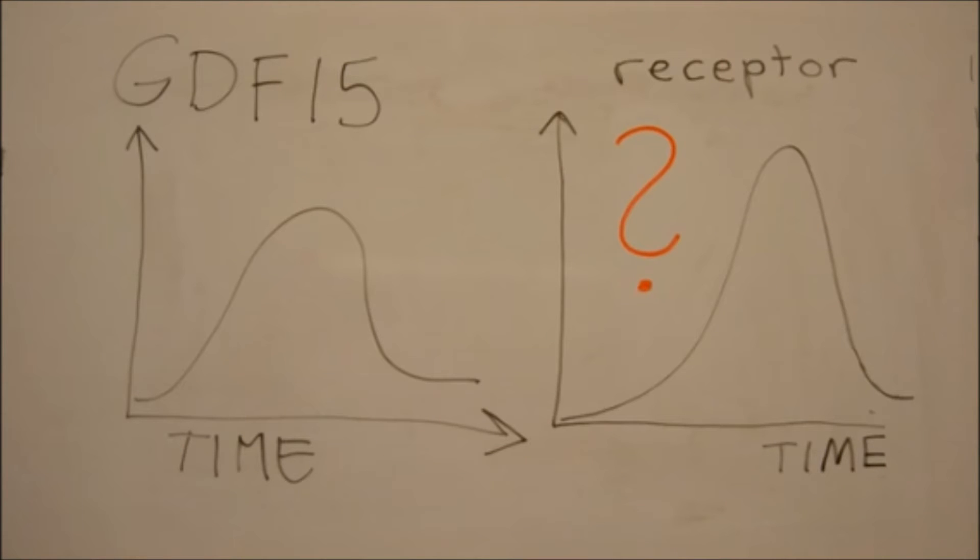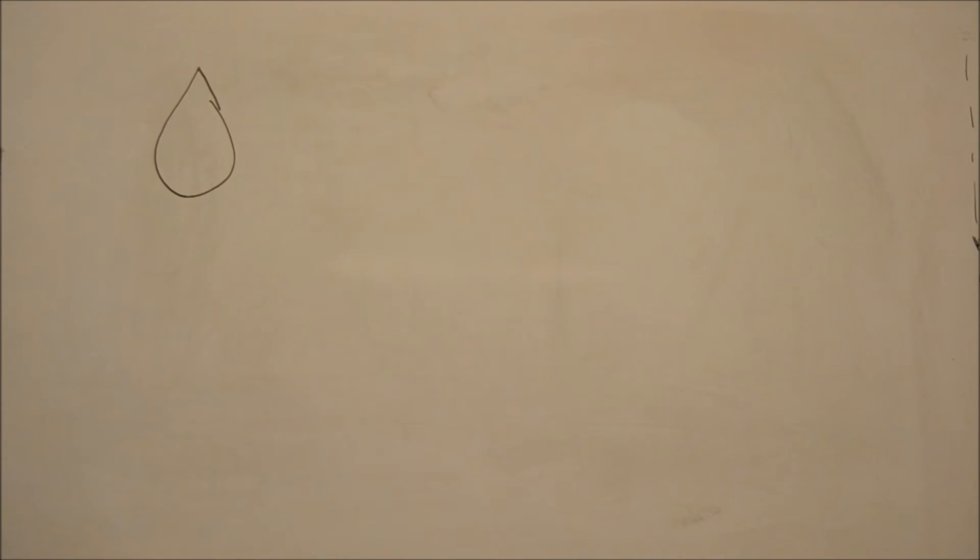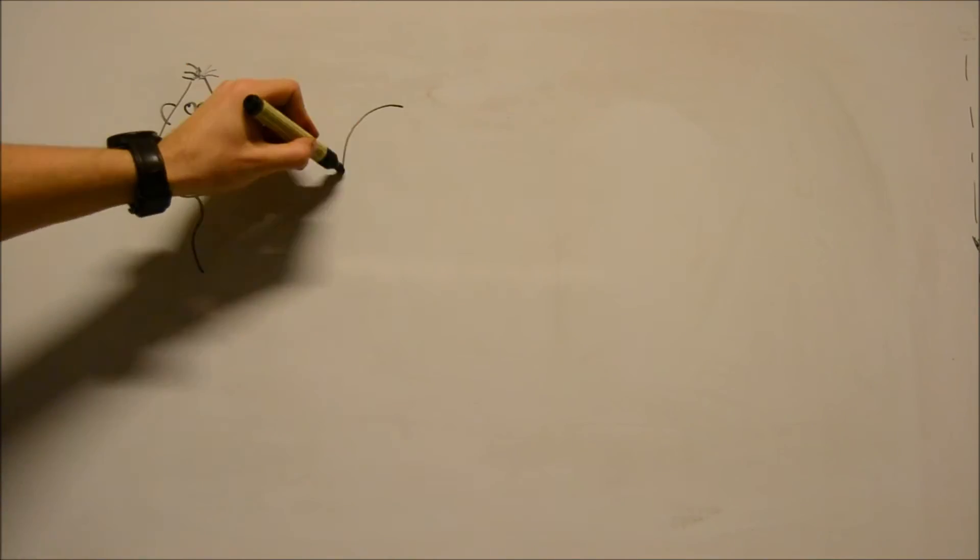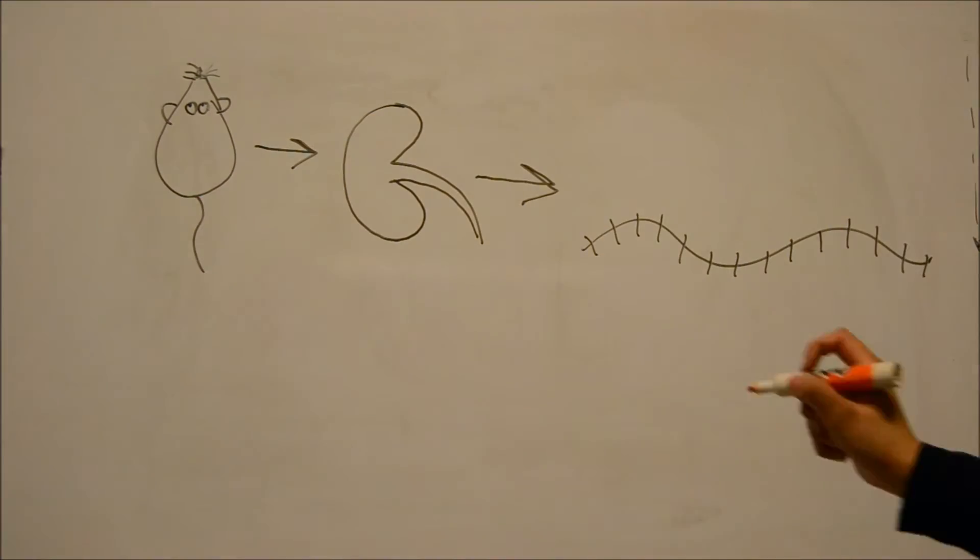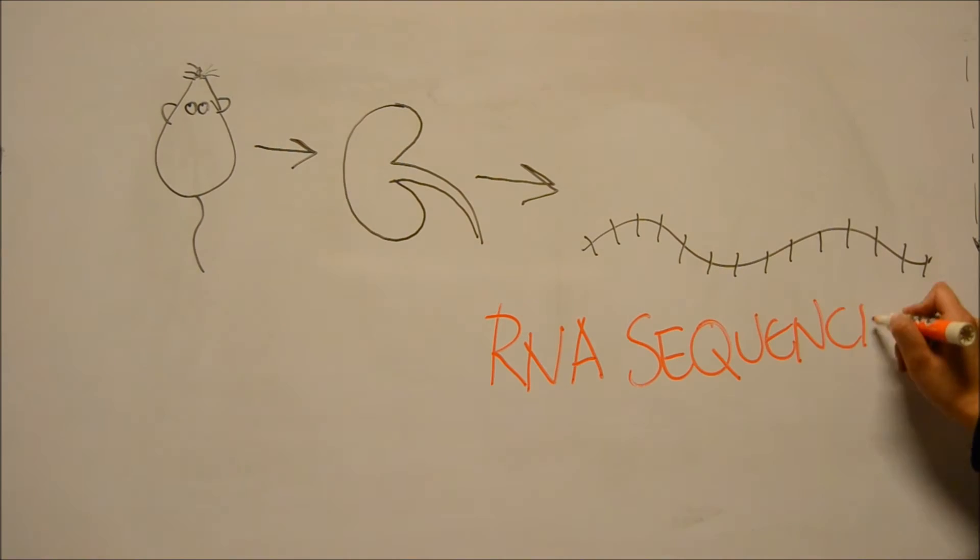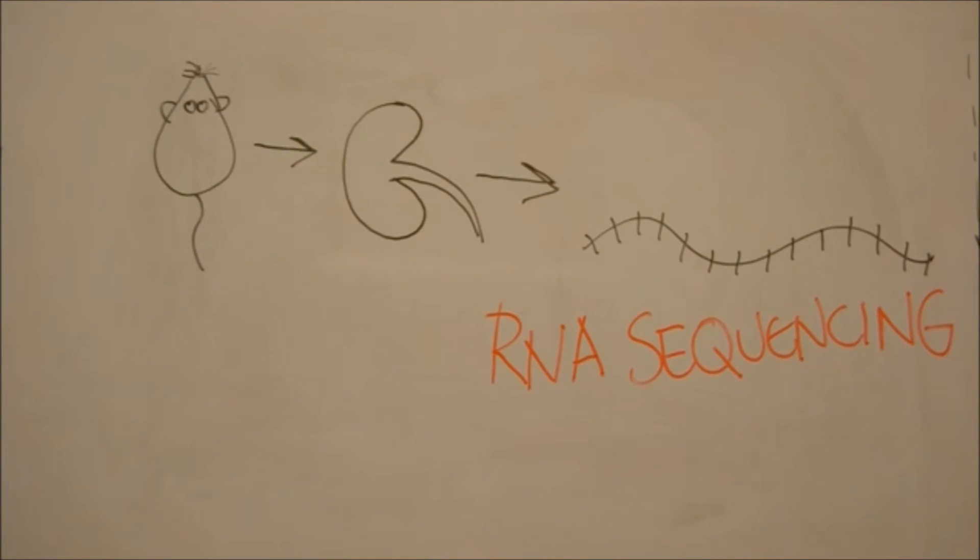The next step is to perform a screen in which we can identify the receptors that follow the same expression profile. For this screening process, we will use the tissues where GDF-15 was most concentrated, for example the kidney. Then, we will perform RNA sequencing to analyze the whole transcriptome of the tissue.